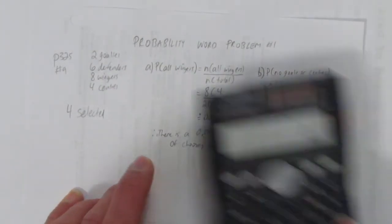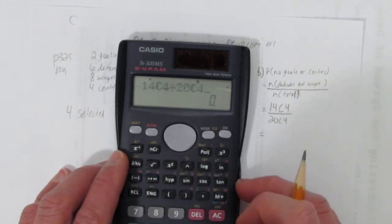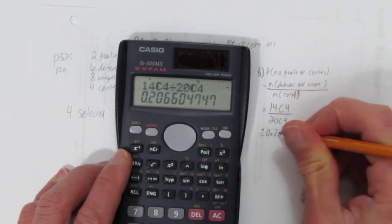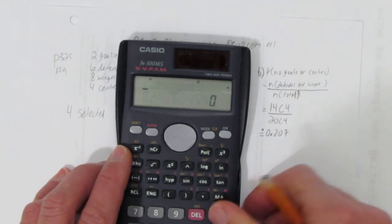And now we bring out the calculator again. What's 14 choose four, divided by 20, choose four. And you get approximately, let's round to three decimals again, 0.207, or 20.7%.